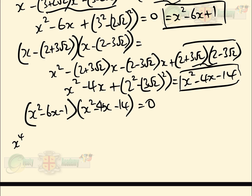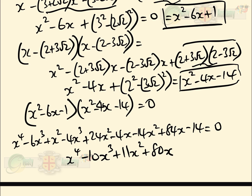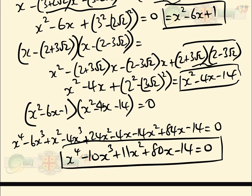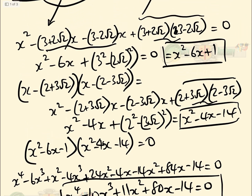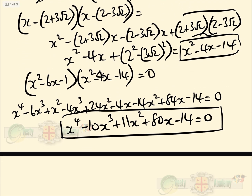Multiplying (x² - 6x + 1)(x² - 4x - 14) = 0 gives x⁴ - 6x³ + x² - 4x³ + 24x² - 4x - 14x² + 84x - 14. Collecting like terms: x⁴ - 10x³ + 11x² + 80x - 14 = 0. That is the correct answer. Make sure you multiply out conjugate pairs first — doing it all longhand at once would take forever.